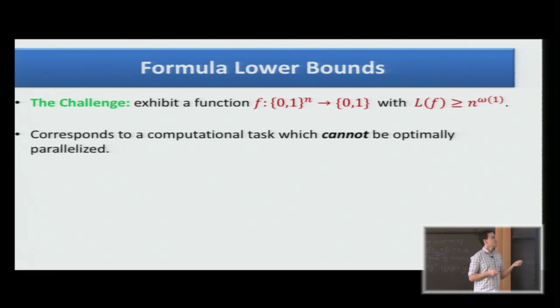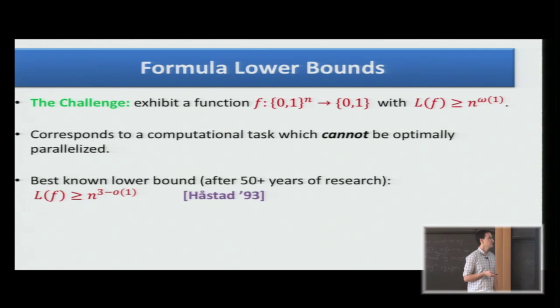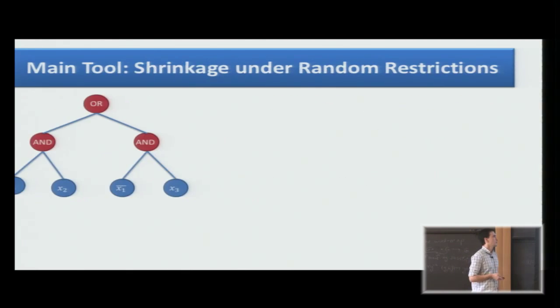It seems that some problems are hard, that require super polynomial size, but we are still very far from proving it. In fact, after more than 50 years of research, the best known lower bound is n cubed. This is due to Håstad from 1993. I want to tell you a little bit about this lower bound.